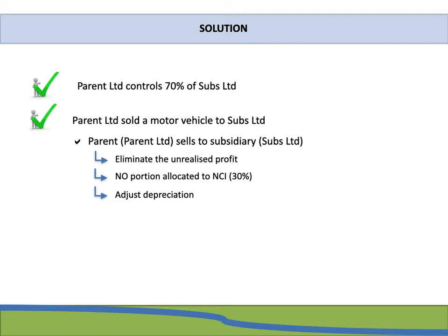When adjusting depreciation, we need to consider the date on which the item was sold. If the motor vehicle is sold at the end of the year, you will not adjust depreciation for that specific period. But as in our example, the motor vehicle was sold at the beginning of the financial year, so we still need to adjust depreciation for the current year. We must also not forget the tax effect of the unrealized profit and the depreciation adjustment.